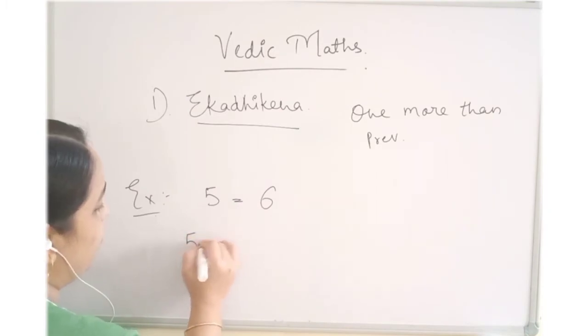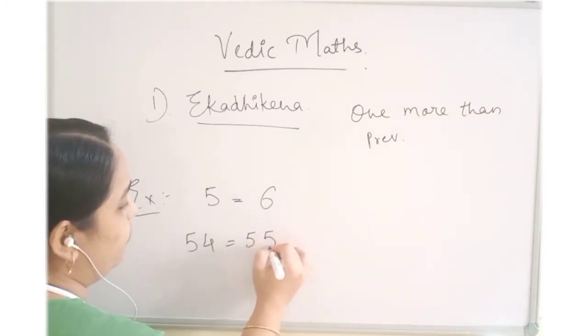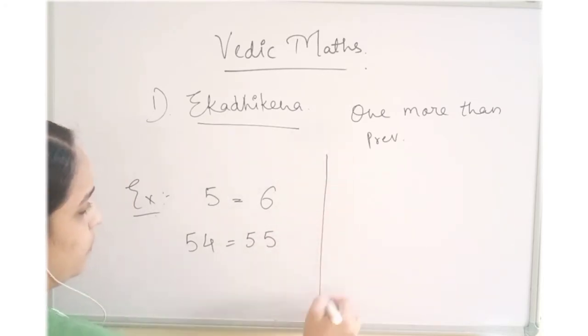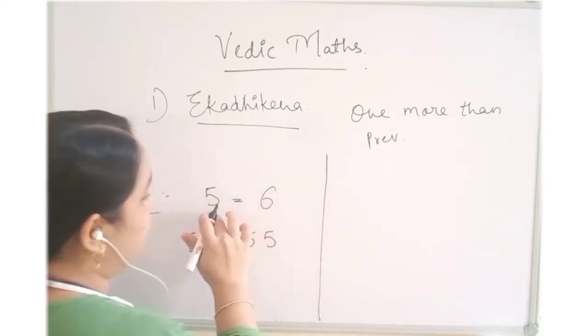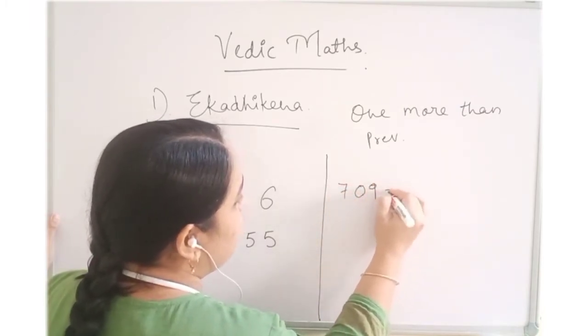Same way, it can be for 54. Ikadi Kena will be 55. Any number you can take—single digit, 2 digit, 4 digit, whatever. 709, Ikadi Kena of 709 is 710.